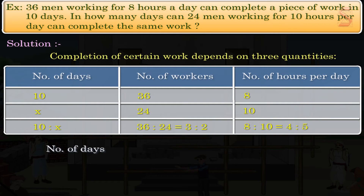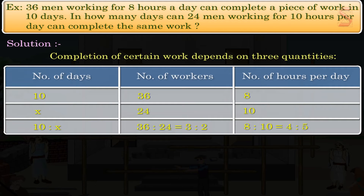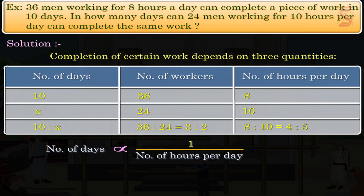It is clear that the number of days required to complete the work is inversely proportional to the number of workers. So, we have 10 is to x equal to the inverse ratio of 3 is to 2, that is, 10 is to x equal to 2 is to 3. And again, the number of days required to complete the work is inversely proportional to the number of hours per day the workers are working.